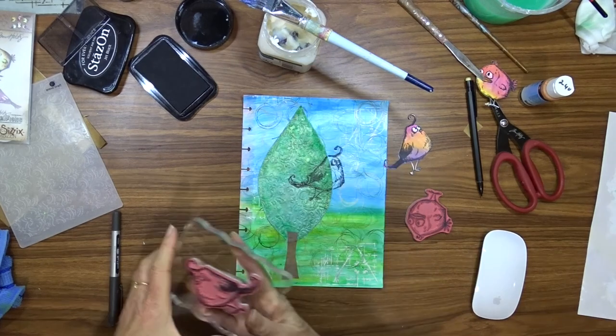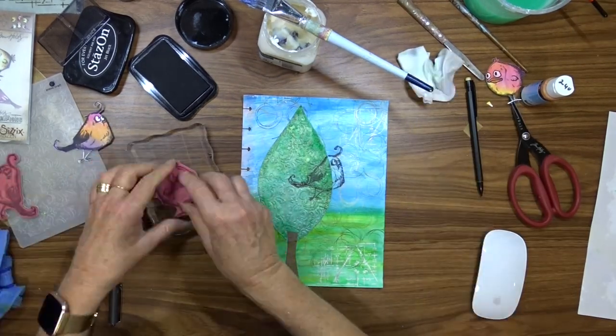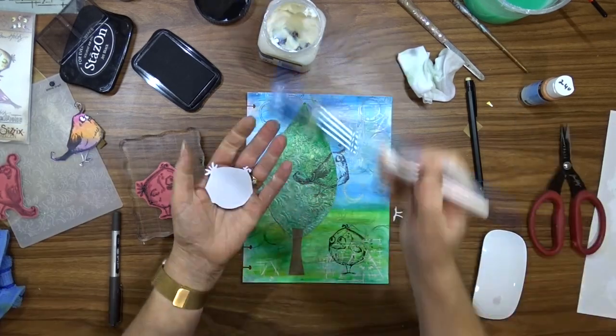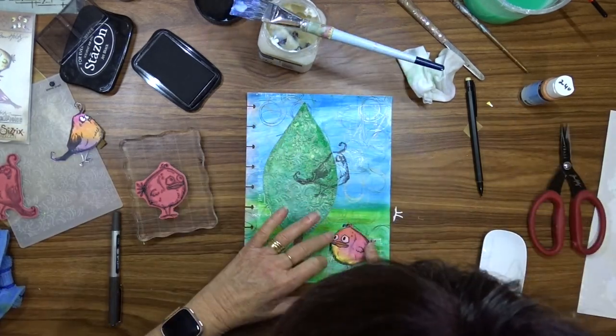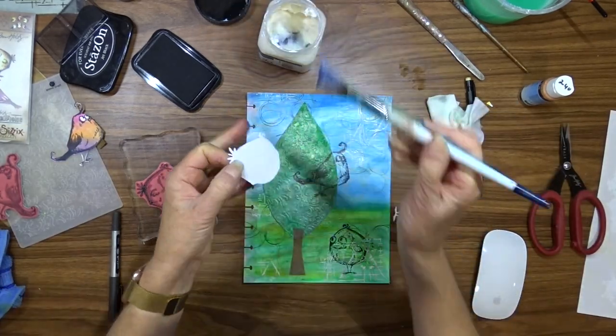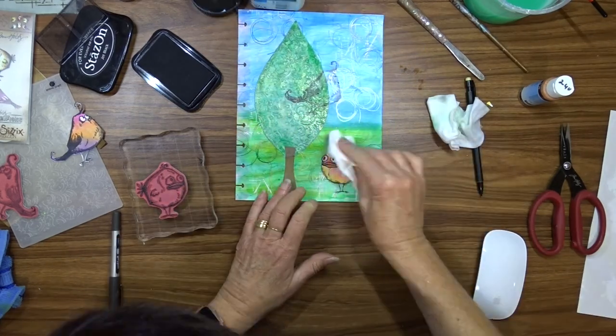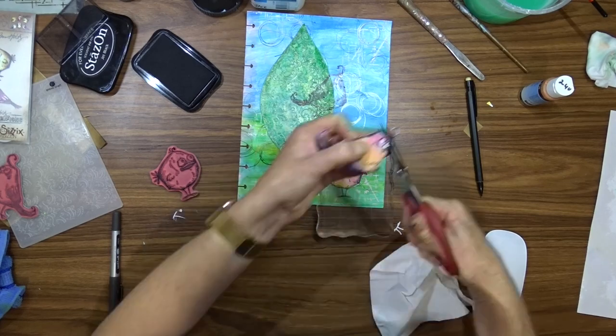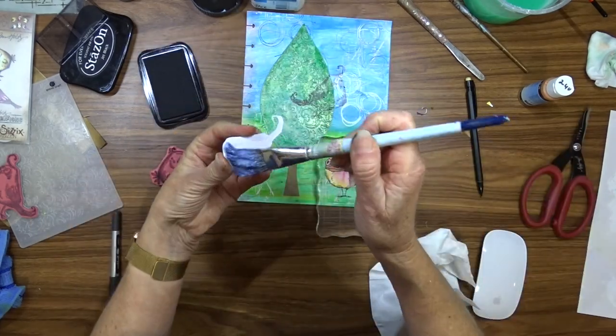I'm stamping my birds onto my page where I want the birds to be so that I can get the fine details like the legs and the feathers around the head area. Once I've got the birds stamped in the position I want them, I use the gel medium to attach the colored birds on top.